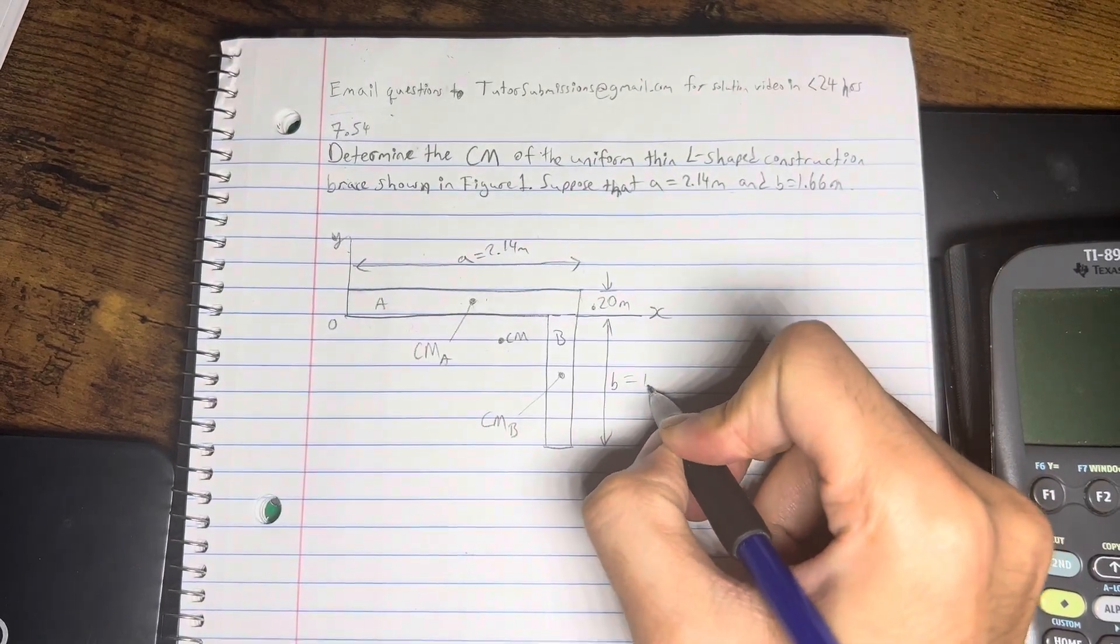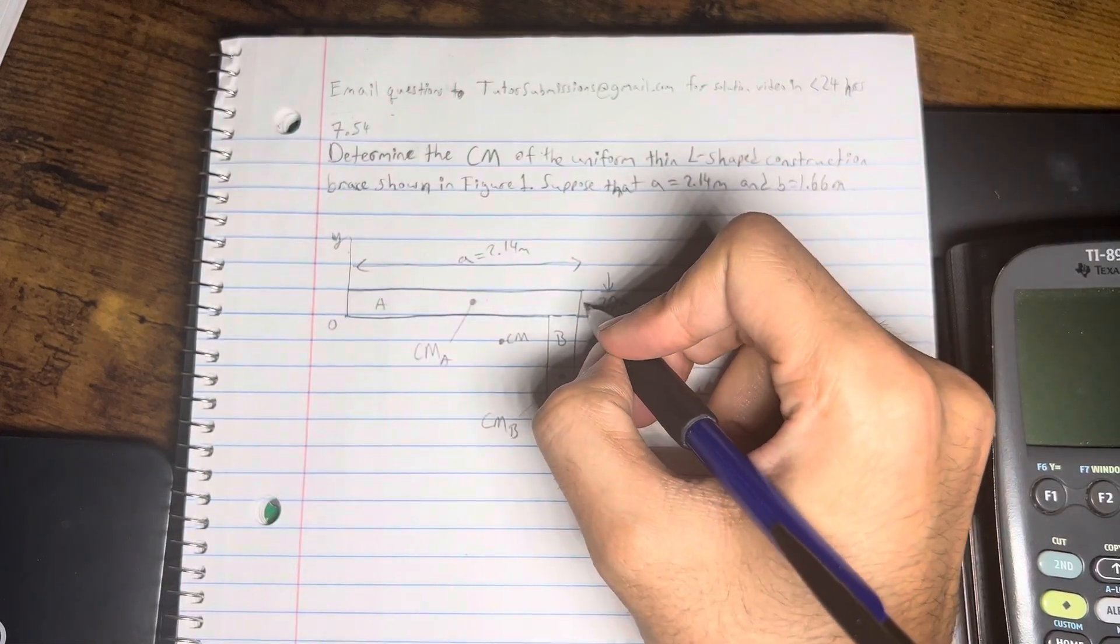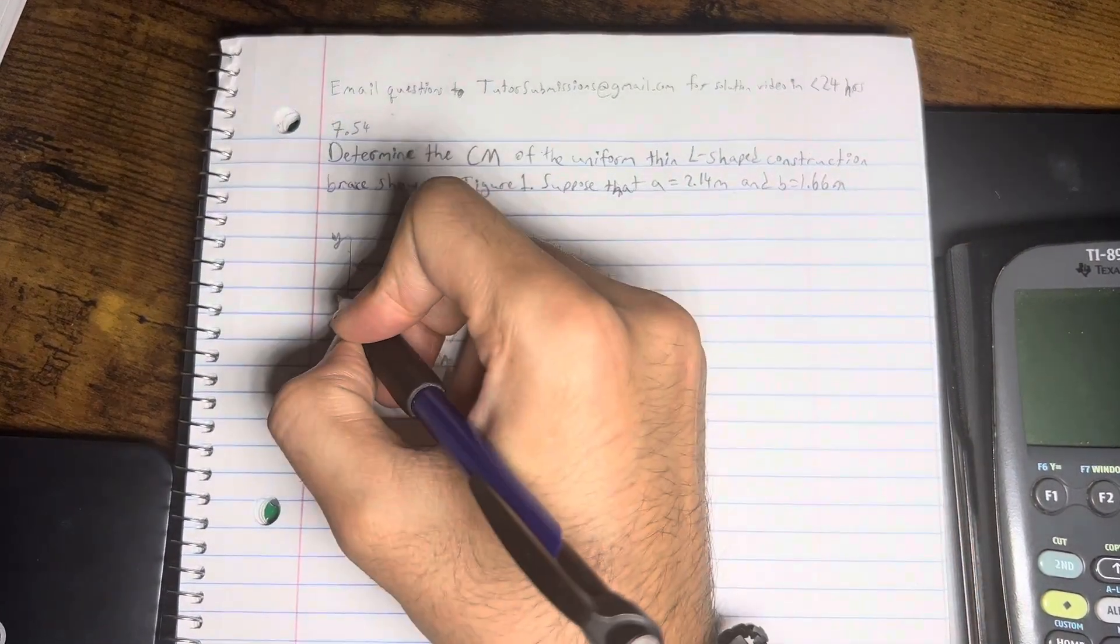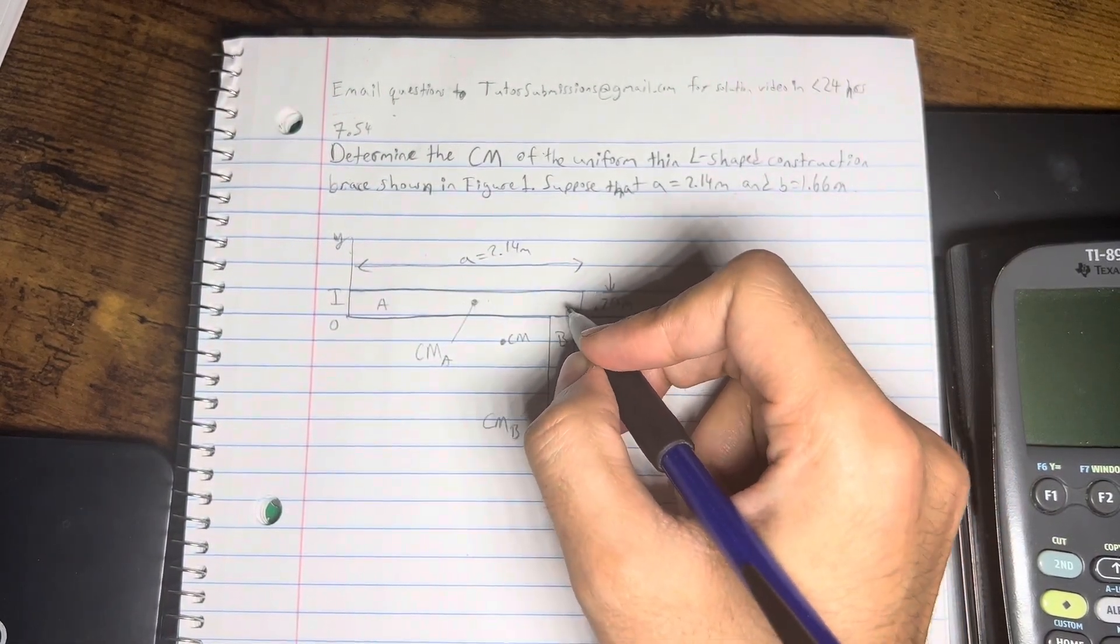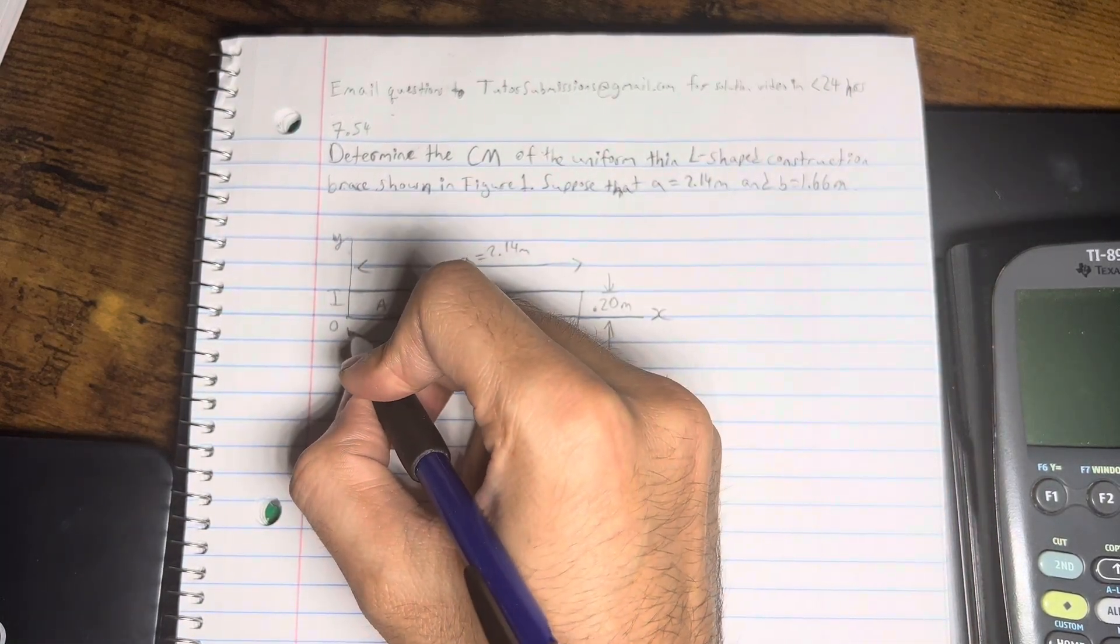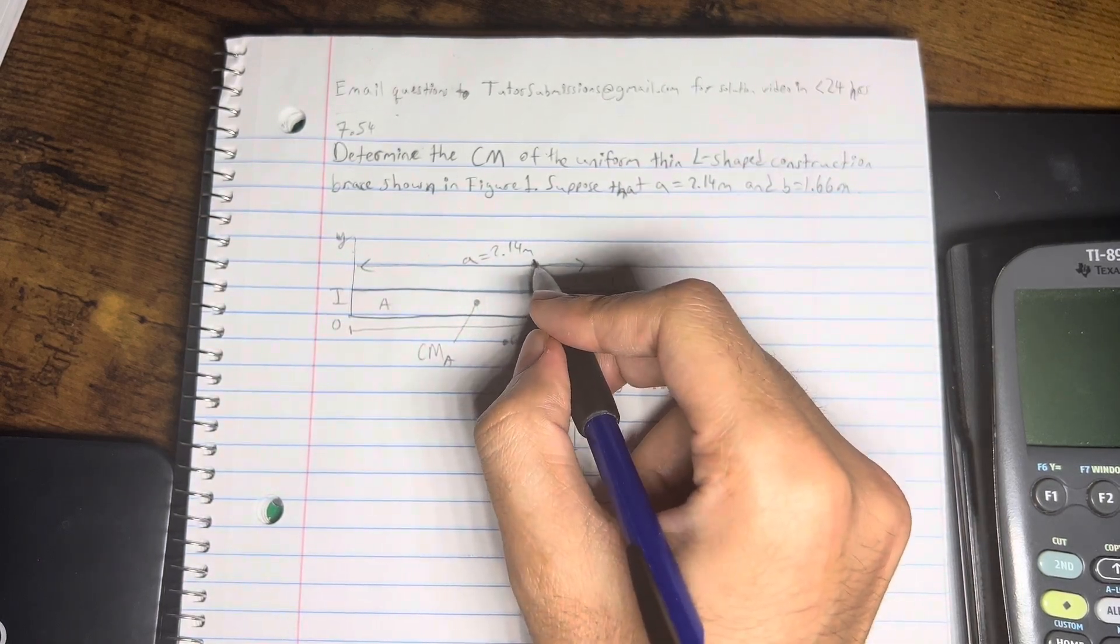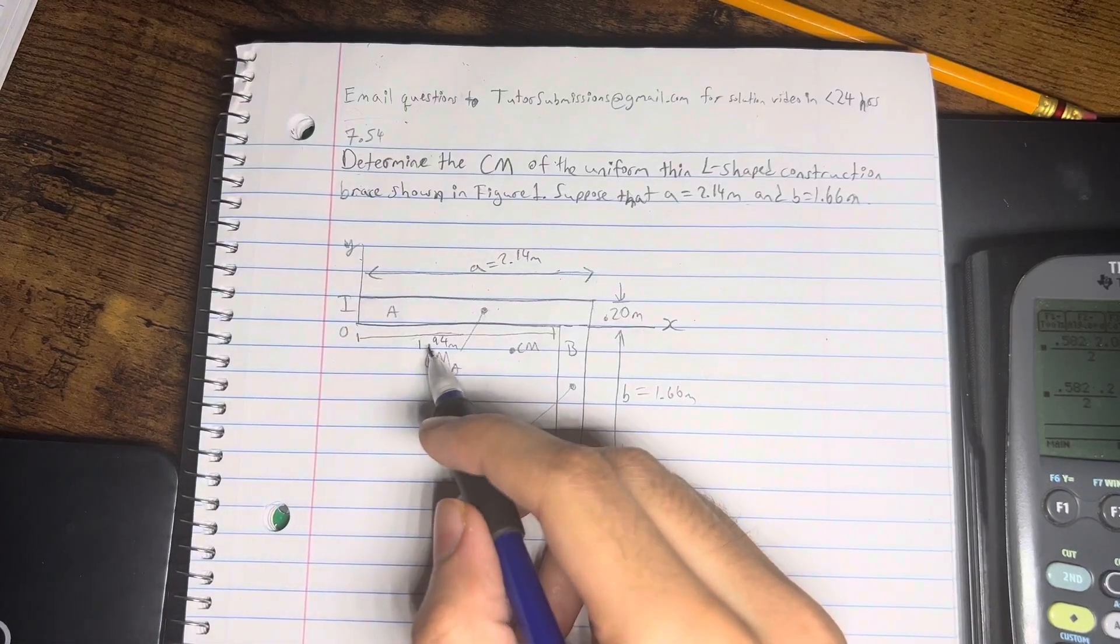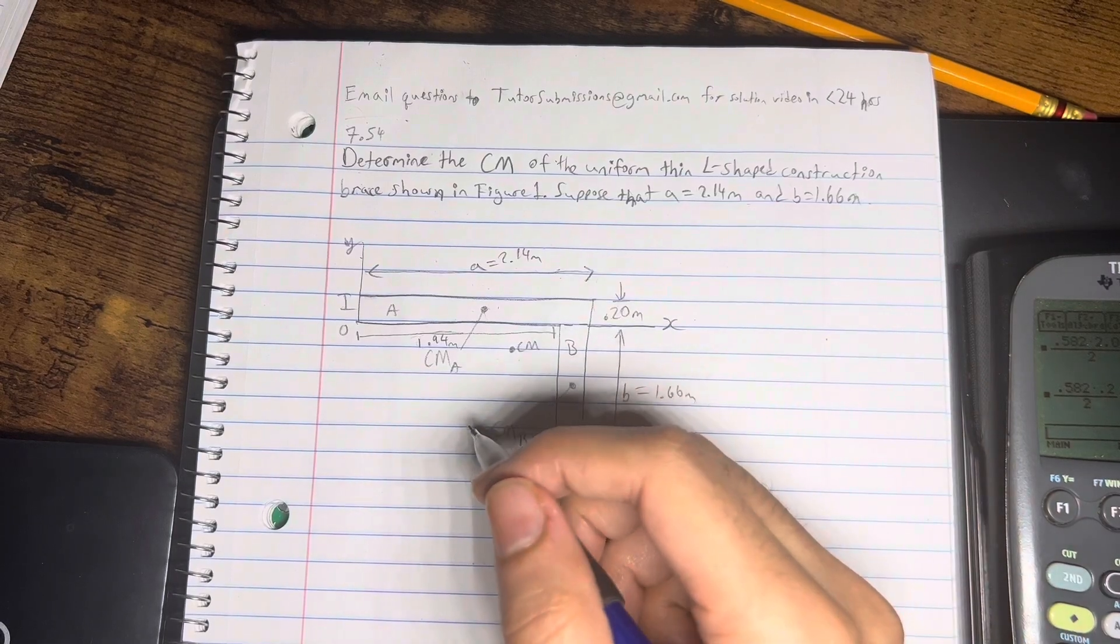So B equals 1.66. And the width of these tubes here, these are all 0.20 meters. So here as well. And right here. So that means I'm going to go ahead and label this length as 2.14 minus 0.2. So that's going to give us 1.94 meters. Alright, so let's go ahead and get started.